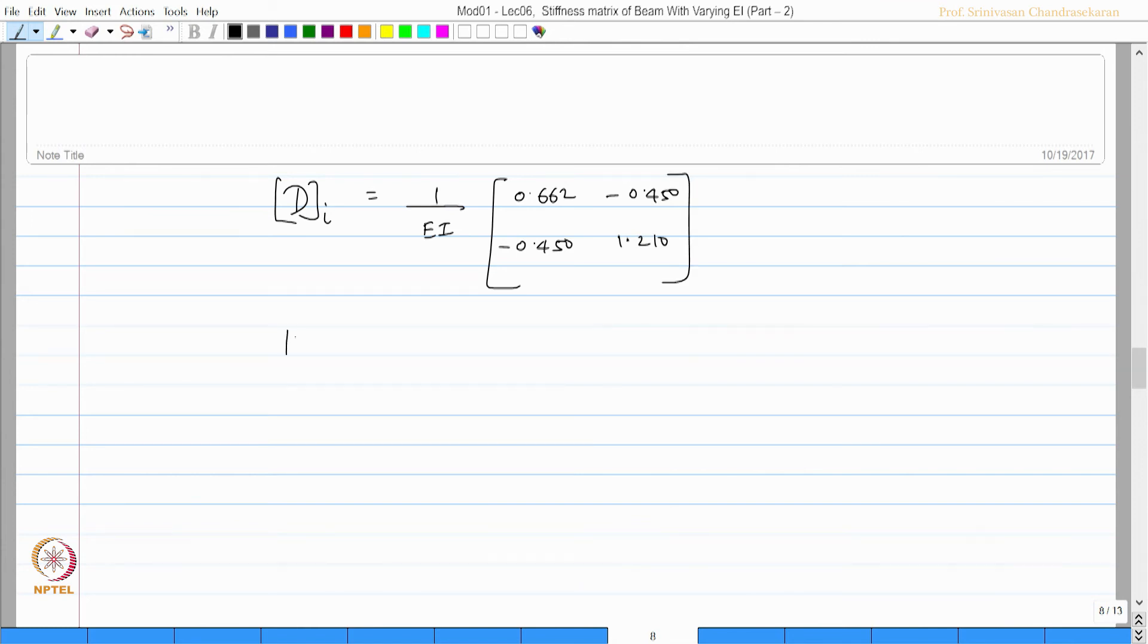Now, my stiffness matrix for this i-th beam is the flexibility matrix inverse, which will be EI by 0.599. That is, I am doing matrix inversion by the conventional method. So 1.210, 0.662, 0.450, 0.450, which will give me K as EI times 2.02, 0.751, 0.751, 1.105.